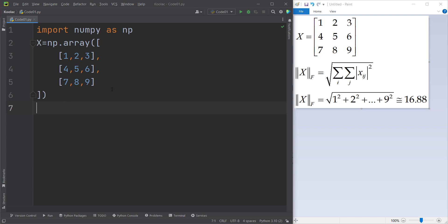So now let's calculate this in Python. As you can see, we have imported NumPy as np, and also here we have defined our matrix. This is the first row, the second row, the third row.